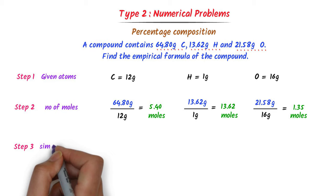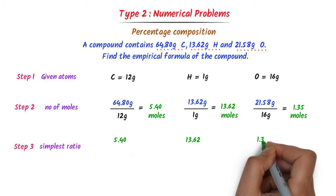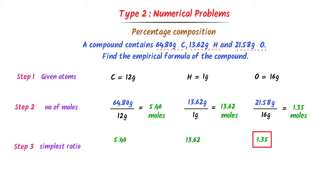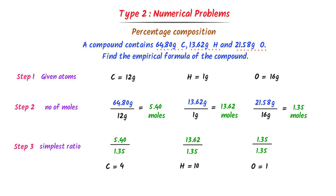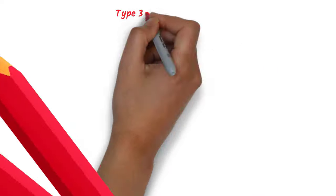In the third step, I find the simplest ratio. The smallest number is 1.35. I divide all values by 1.35: 5.4/1.35, 13.62/1.35, and 1.35/1.35. After calculation, I get 4, 10, and 1. The ratio of carbon is 4, hydrogen is 10, and oxygen is 1. Hence the empirical formula of the compound is C4H10O1. Using these three steps, we can easily find the empirical formula of any compound.